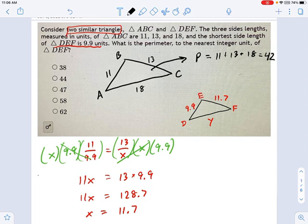You set up the following equation. You say 11 over 9.9—that's the ratio of the lengths of the two triangles—equals the perimeter of the first triangle, perimeter of ABC, divided by the perimeter of the second triangle, DEF.